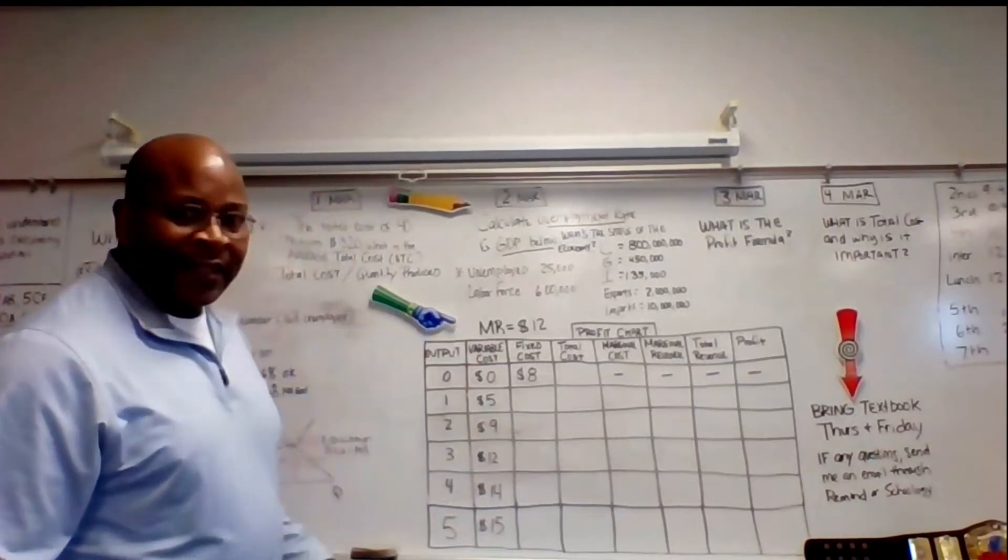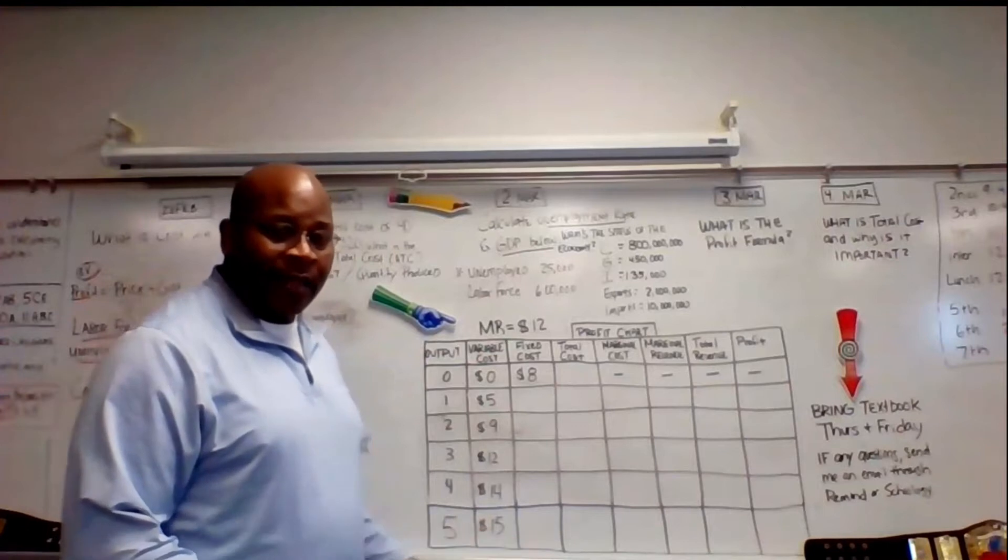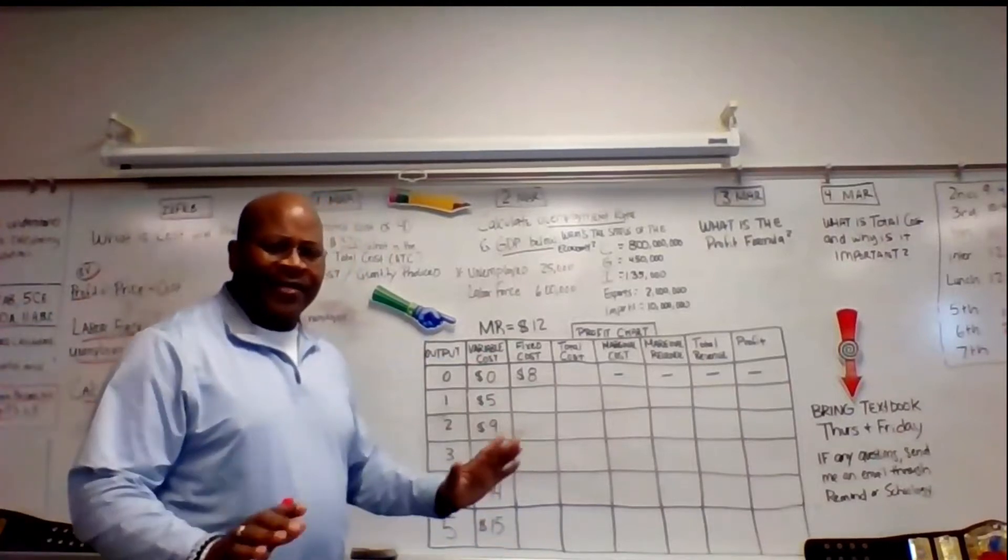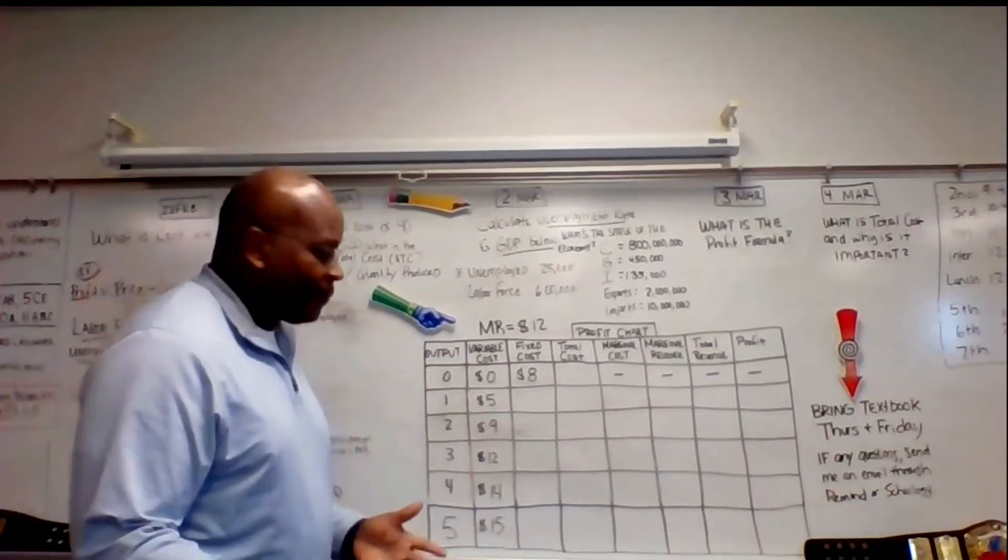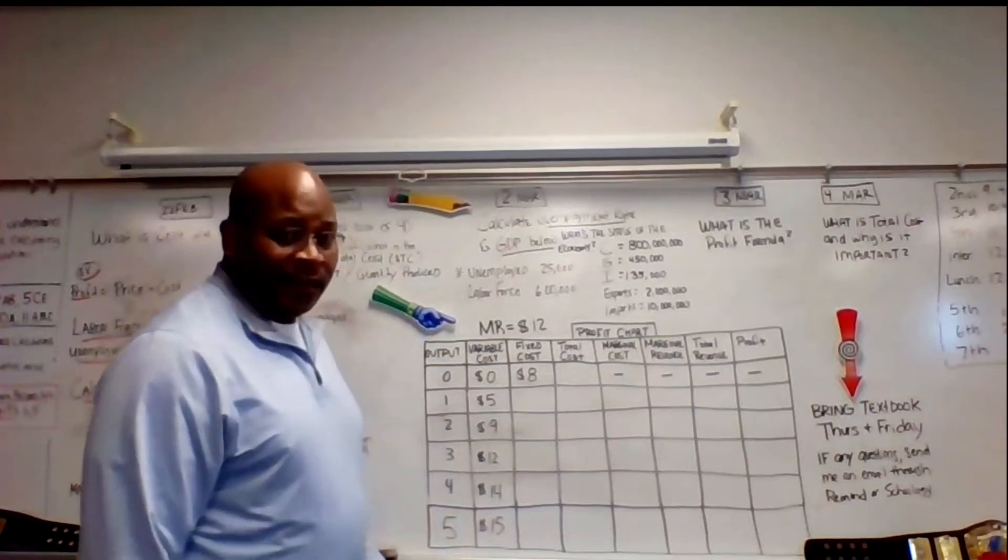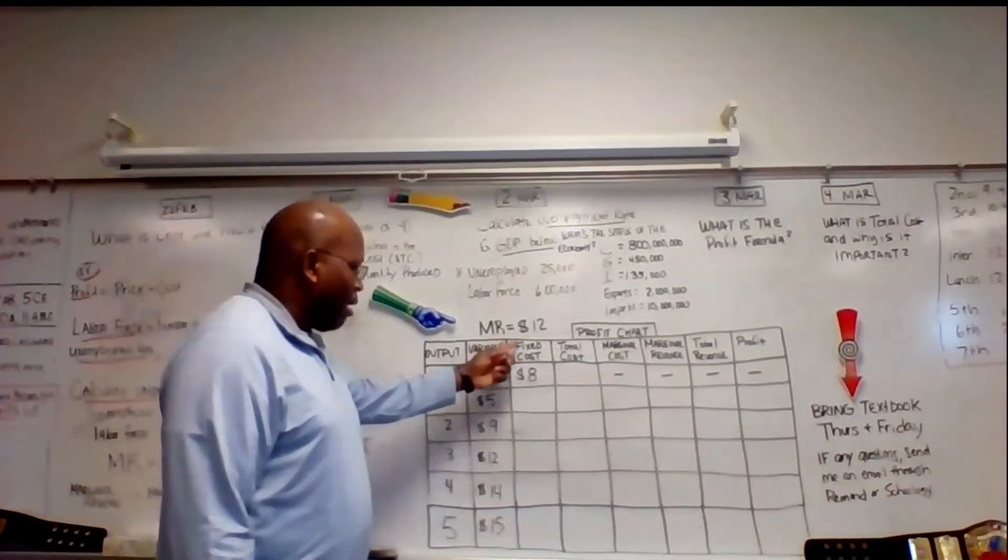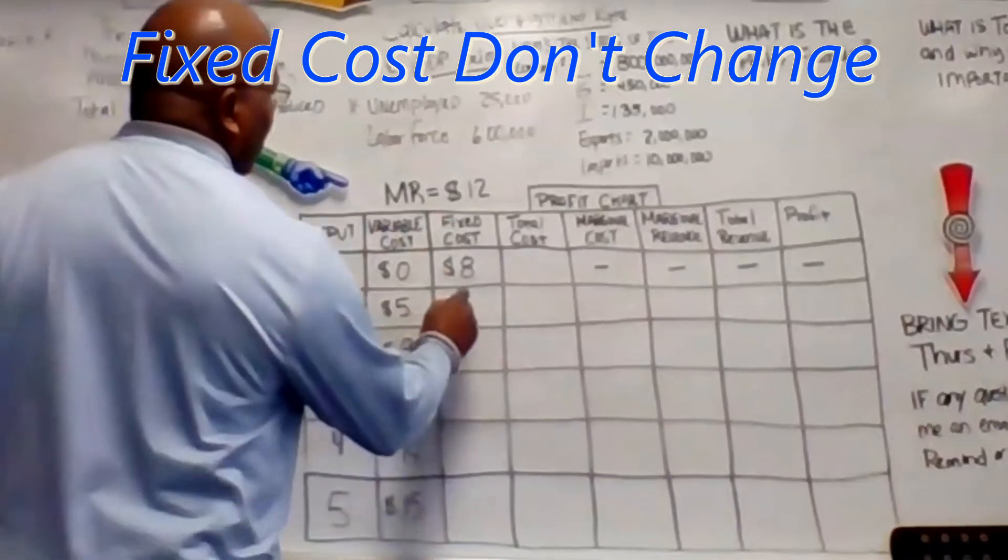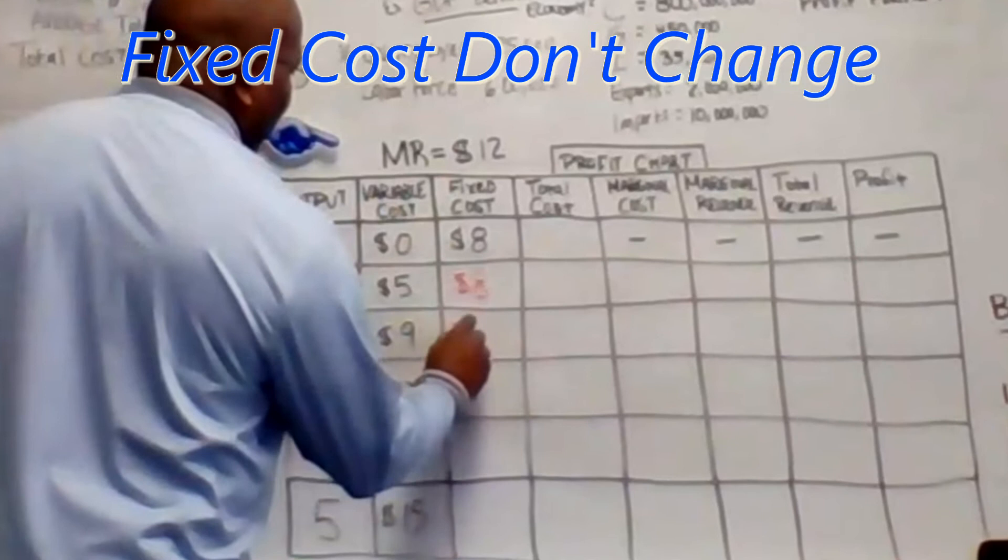There's certain things that are going to be given and certain things are going to be constant. So when you get your chart, don't be caught off guard thinking, well, I can't do this. Keep everything simple. I believe in simplicity. So again, these numbers are given. Certain things are fixed. For instance, fixed costs. Fixed costs don't change. So right off the bat, you want to go ahead and put in your fixed costs in the fixed costs line.